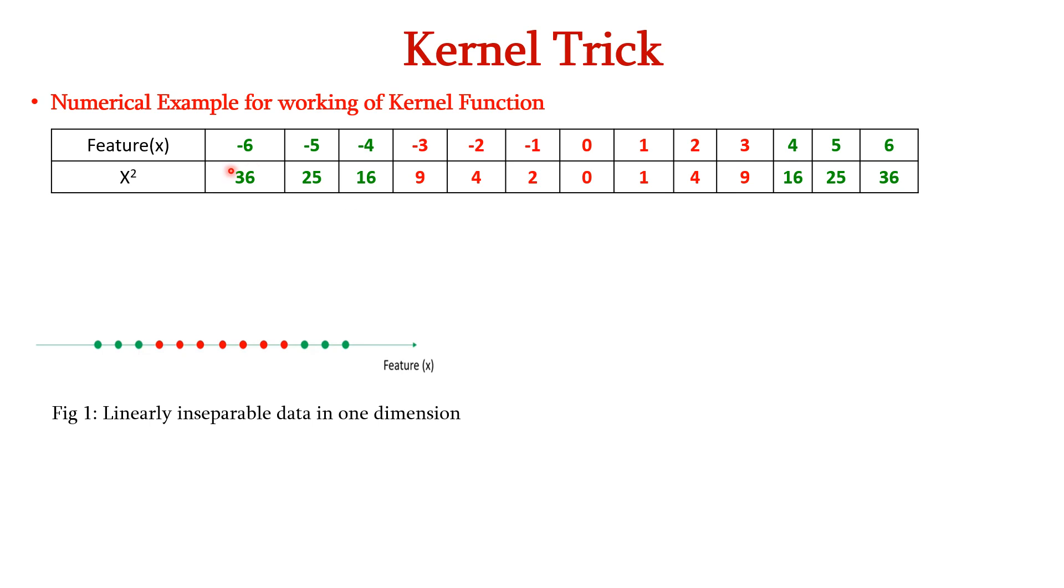So, if we represent this feature x in one dimension, we can see the graph here. So, we have green points here: -6, -5, -4, followed by red points from -3 to +3, and then we have 4, 5, 6 at the end. So, this data is linearly inseparable. In one dimension it is linearly inseparable. We cannot separate these two classes using a line or a curve.